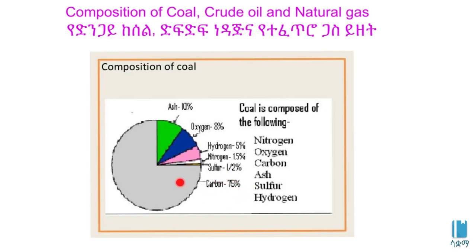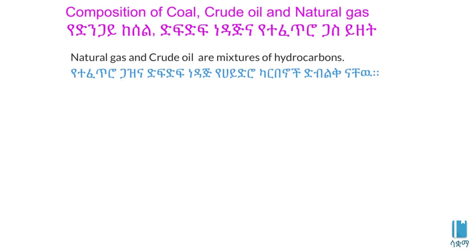In this composition of coal there are carbohydrates. Natural gas and crude oil are mixtures of hydrocarbons. If you have natural gas, you can use hydrocarbons. When natural gas and crude oil are hydrocarbons, you can use hydrocarbons.